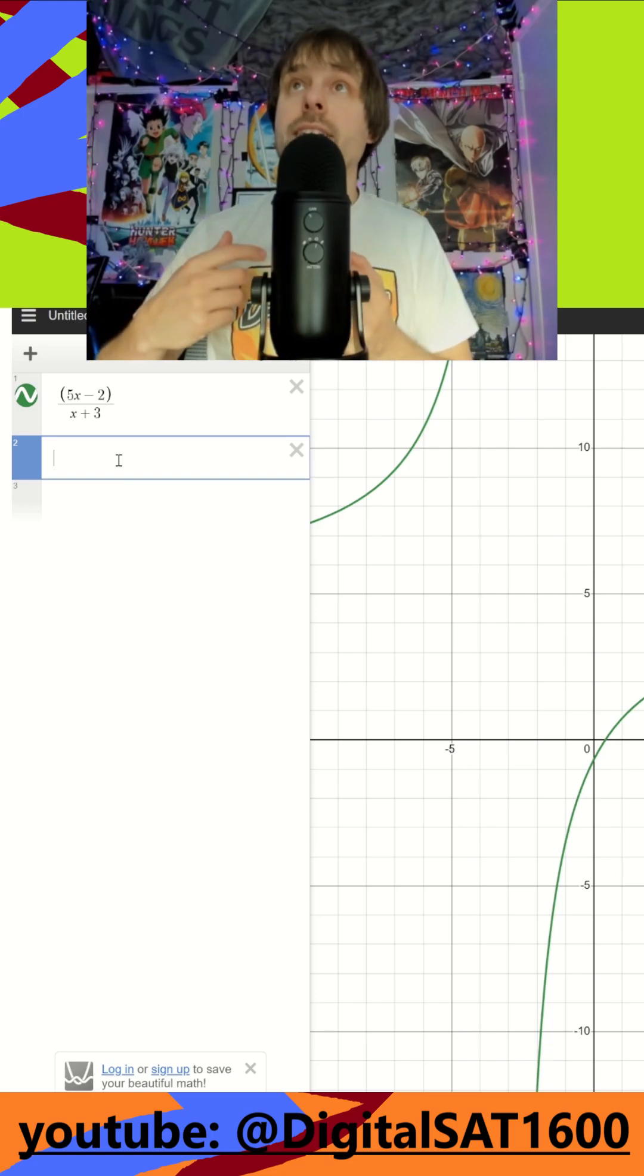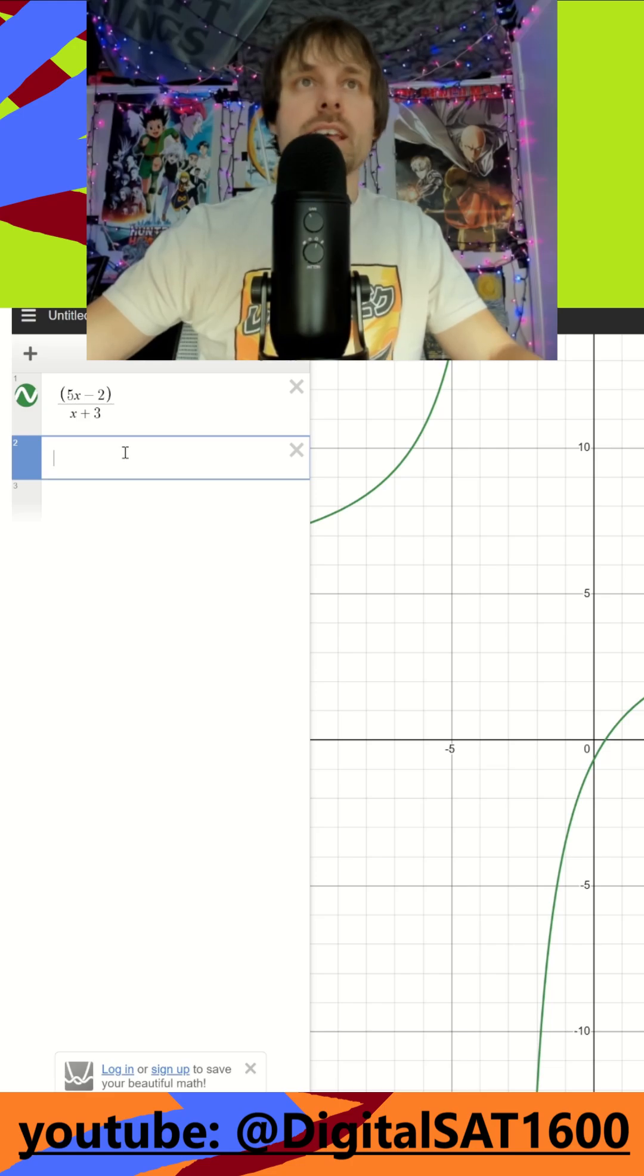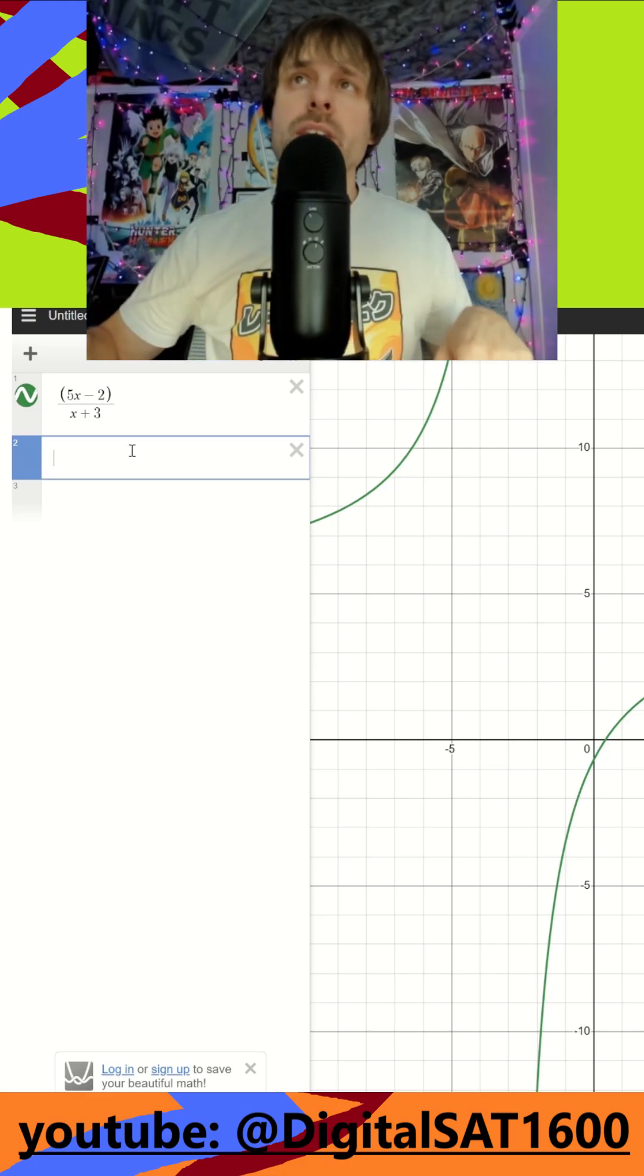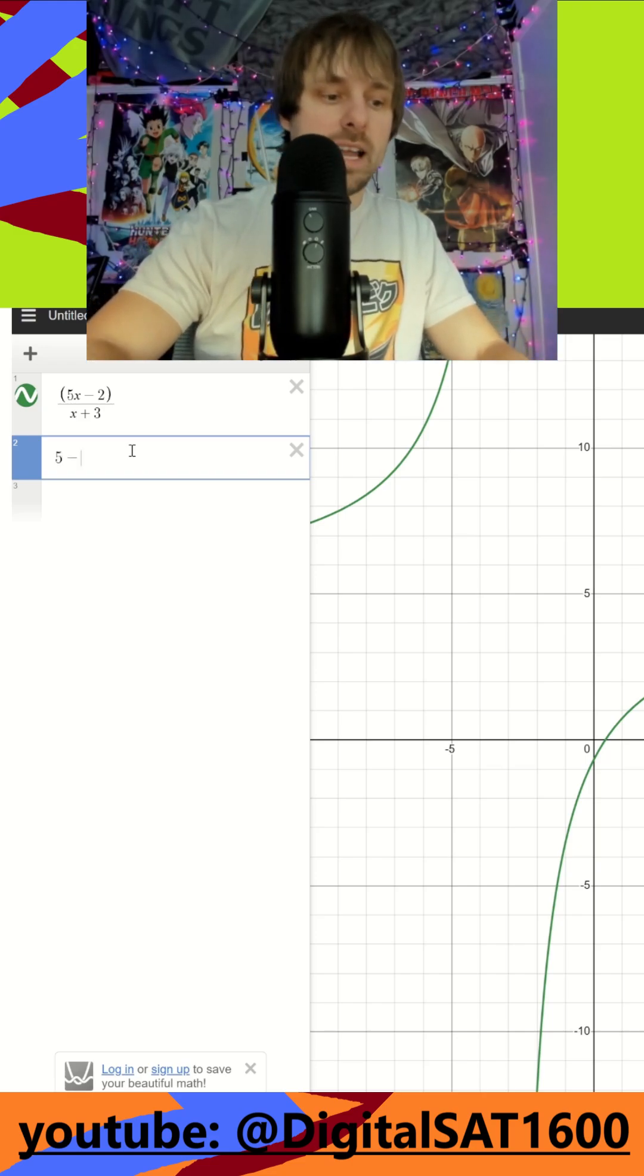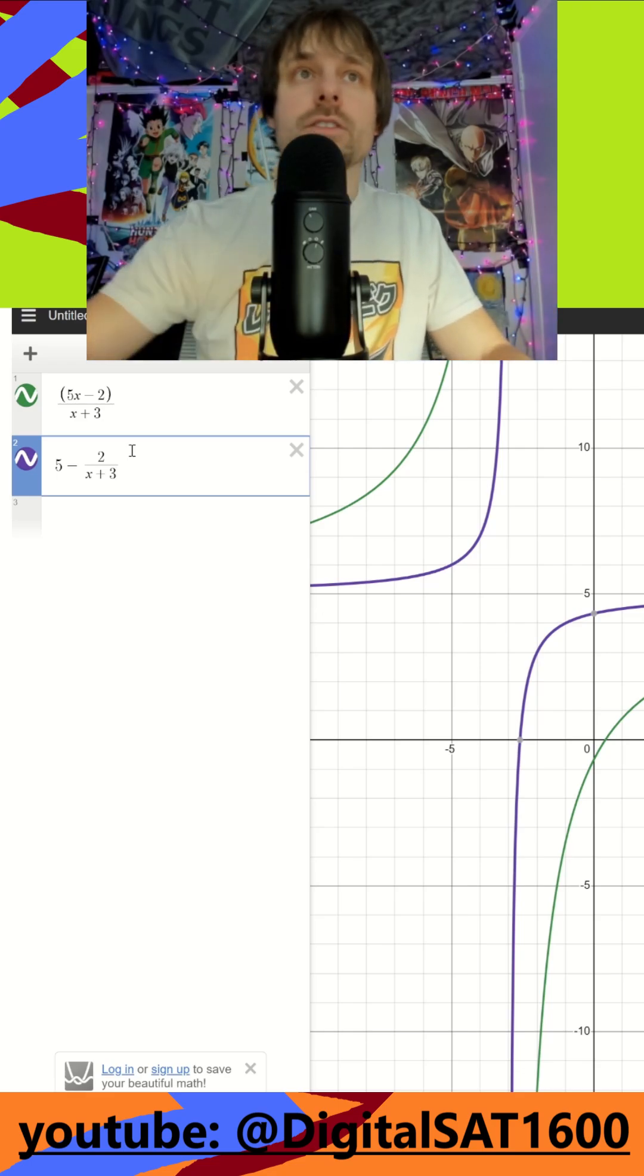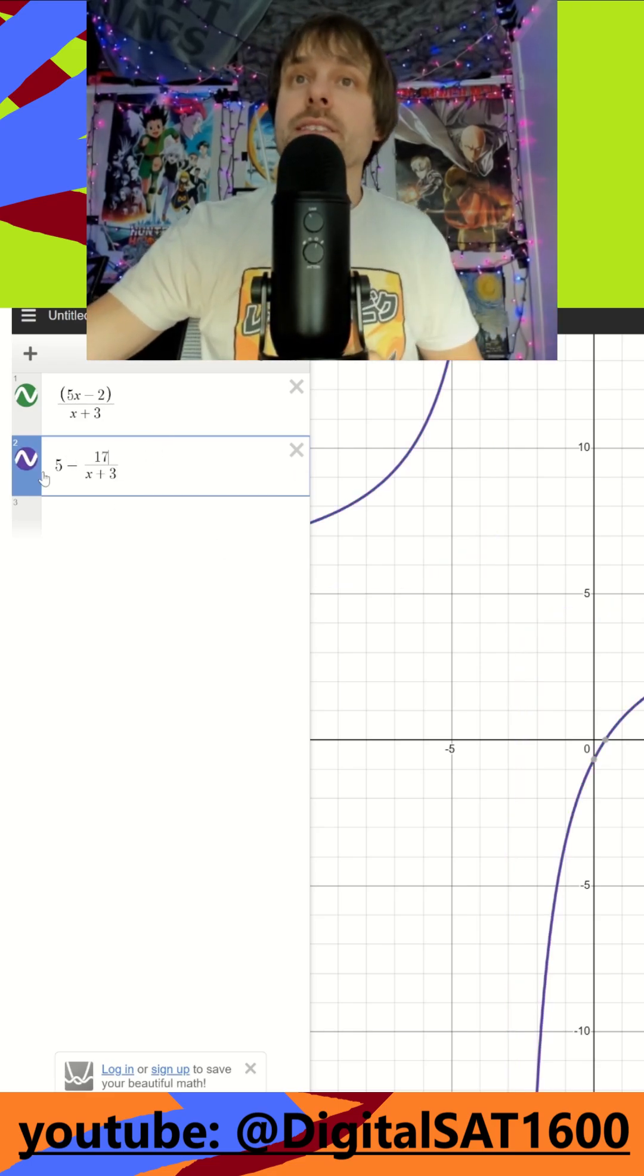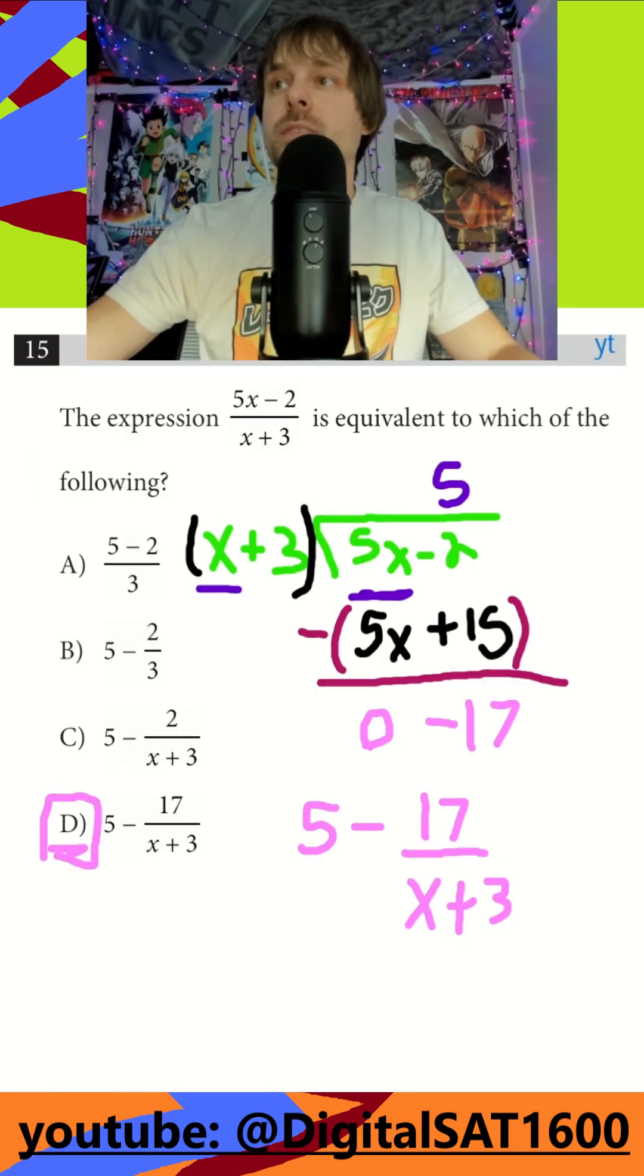And then what we're looking for in our answer choices here is what's going to match this graph. So you can't see the bottom right one, so we'll just focus on that top left. So I know A and B aren't going to match my graph because A and B are just going to be straight lines. So I jumped straight to C, 5 minus 2 divided by x plus 3. You can see how that's a different graph. So I just change it to 17 on top for letter choice D, and you can see how these are the same exact graph. So that's it. That's the really easy way to use Desmos to solve this problem, and you also know how to do it by hand.